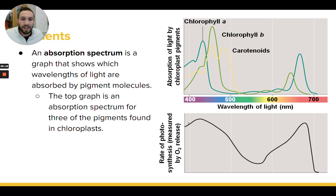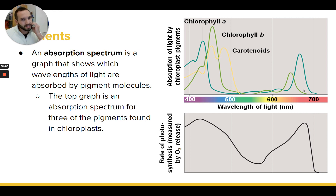This bottom graph shows which wavelengths actually contribute to powering photosynthesis. Purple and blue lights are contributing significantly, but green and yellow wavelengths are barely used — no plant pigments really absorb that range. Some orange and red light is absorbed by other pigments. This confirms why green-yellow light is essentially useless for photosynthesis: those wavelengths aren't absorbed by the plant's pigments. This type of graph is called an absorption spectrum — it shows three different pigments and which wavelengths each one absorbs.